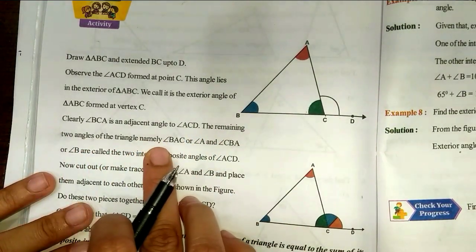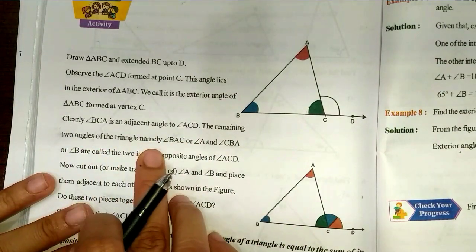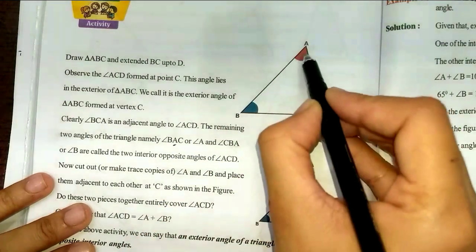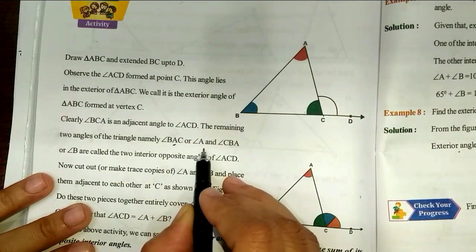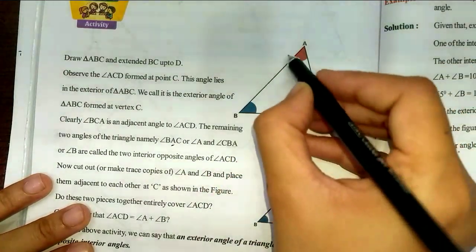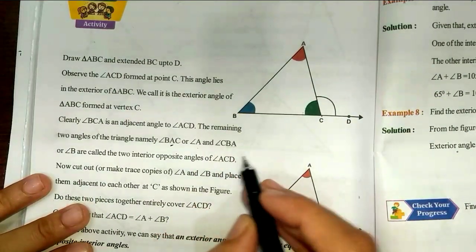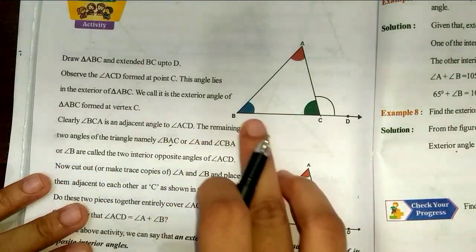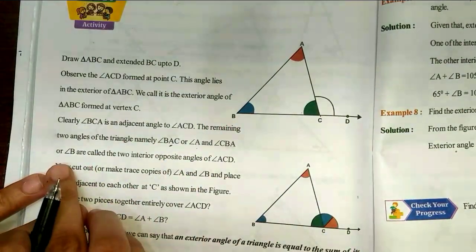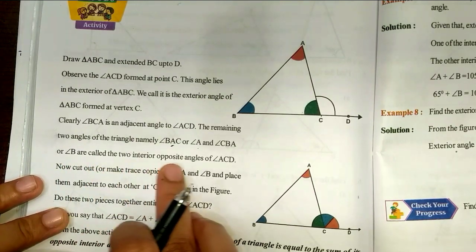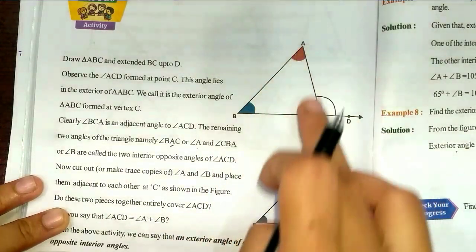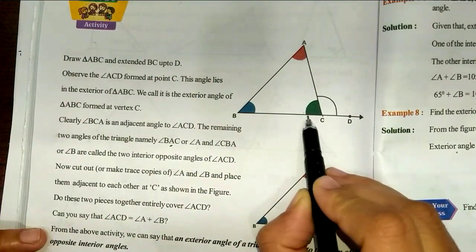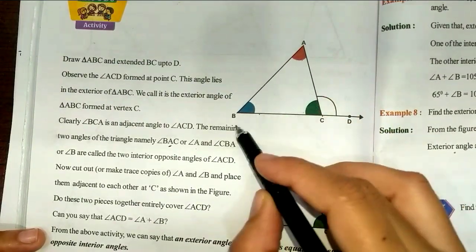The remaining two angles of the triangle — remember the remaining two angles. Angle BAC: the middle A means this angle. Angle BAC is angle A. Angle CBA is angle B. These are called the two interior opposite angles. This angle is adjacent and these two angles are the interior opposite angles.